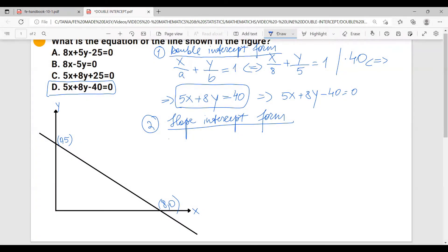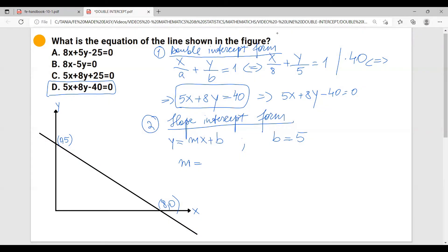The slope intercept form is y equals to the slope mx plus b. We know that the y-intercept is 5. The only thing we have to calculate is the slope. The slope is given by delta y over delta x, also called rise over run, and this is equal to 0 minus 5 over 8 minus 0, which equals minus 5 over 8. The equation of the line equals to the slope, which is minus 5 over 8.